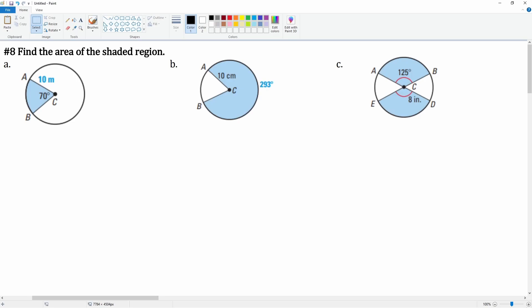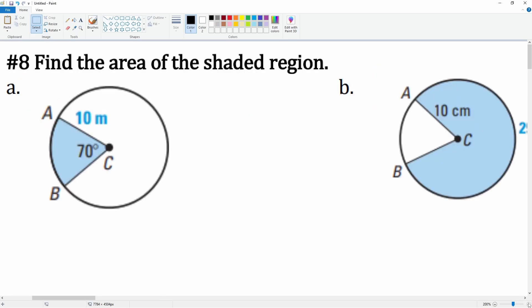Number eight: you're going to find the area of the shaded region. These are all sectors of a circle. Remember, the formula for the sector is defined as the angle over 360 times the total area, which is pi r squared.